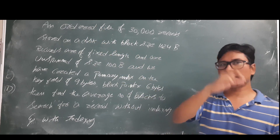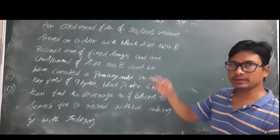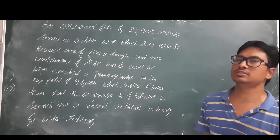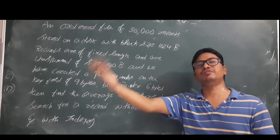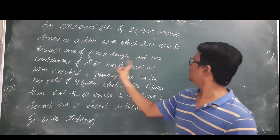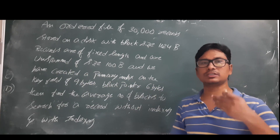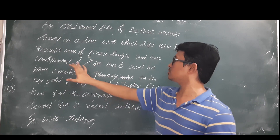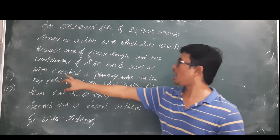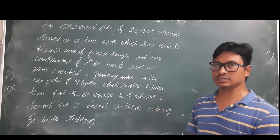We are given an ordered file - the data file is ordered, that is important - of 30,000 records. These records are stored on a disk with a block size of 1024 bytes. Records are of fixed length and are unspanned, of size 100 bytes. A primary indexing is created on the key field of 9 bytes, and the block pointer is 6 bytes.